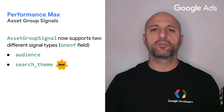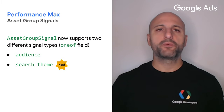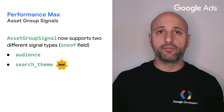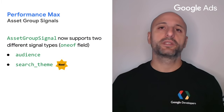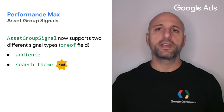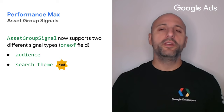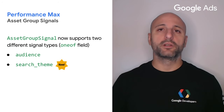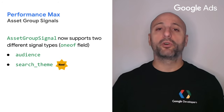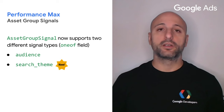Let's start with the changes in the performance max space. Asset group signals now support two different signal types: audiences and search themes. These asset group signals can be attached to an asset group for enhanced targeting.